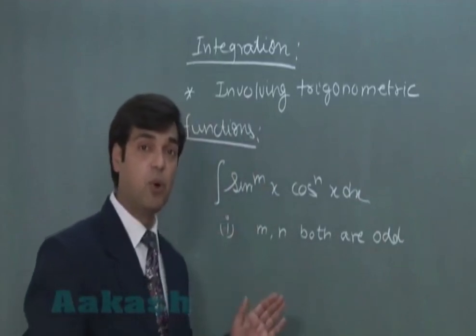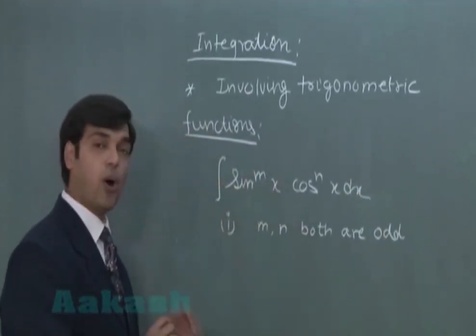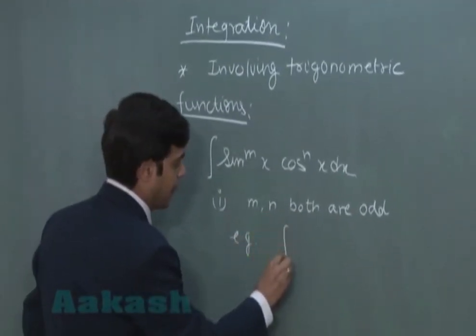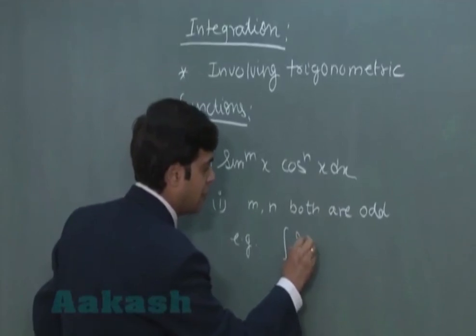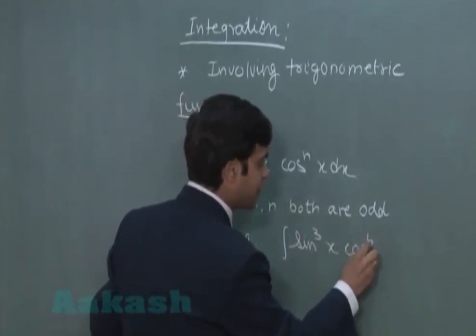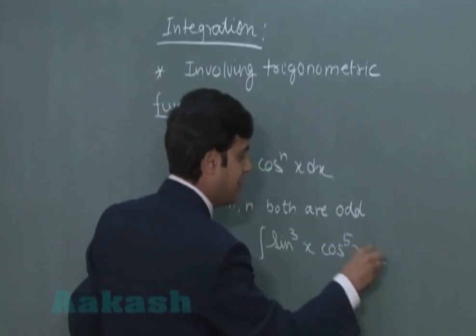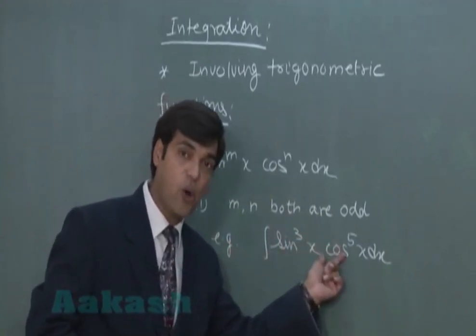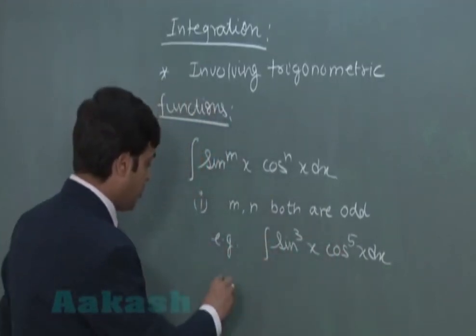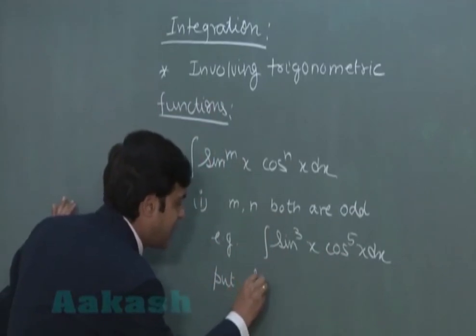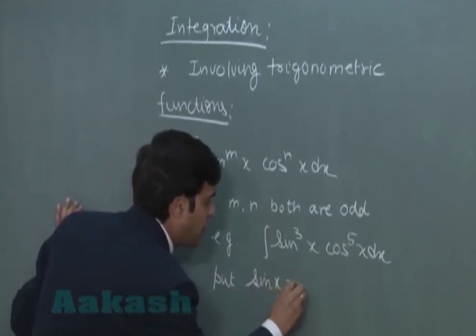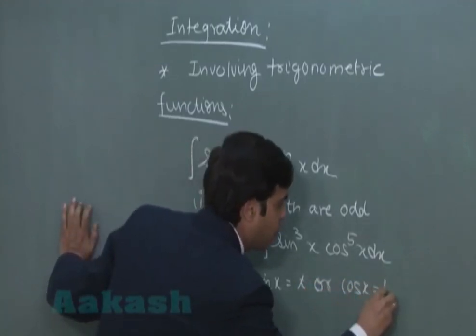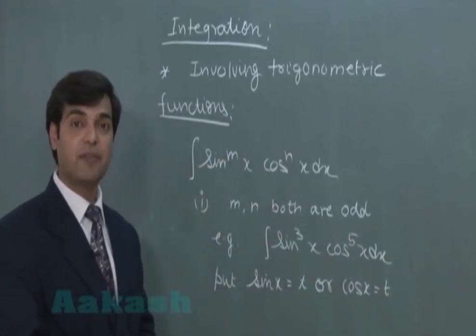m and n both are odd integers. Agar dono hi odd hain. For example, we have a term of the type sin³(x) cos⁵(x) dx. In that case, we can make substitution either sin(x) as t or cos(x) as t. Put sin(x) is equal to t or cos(x) is equal to t. That will help us in integrating the function.